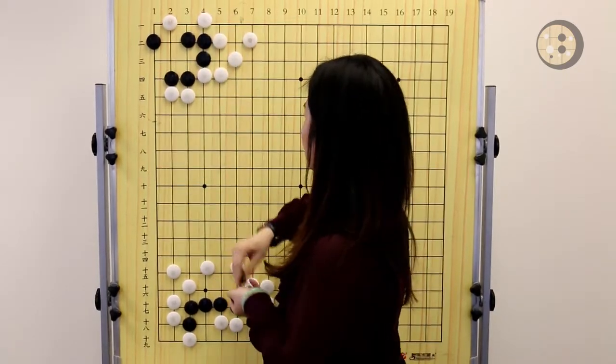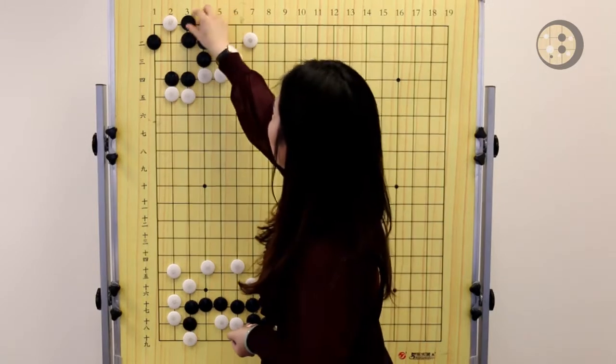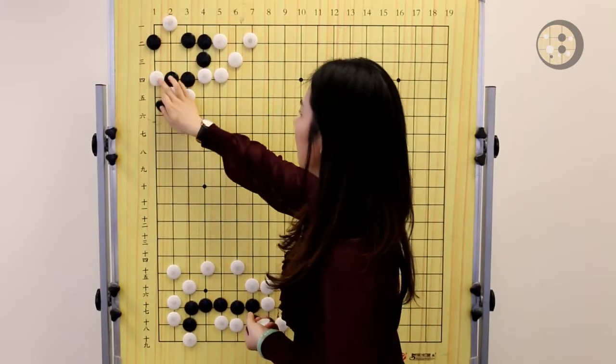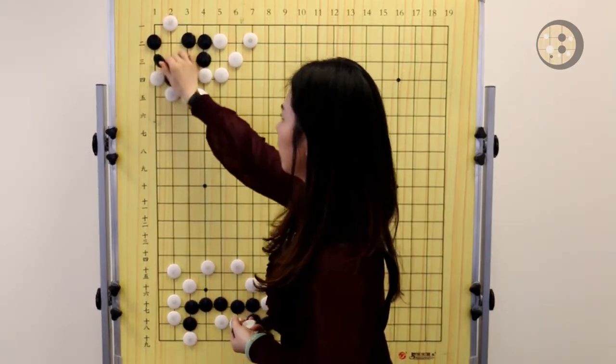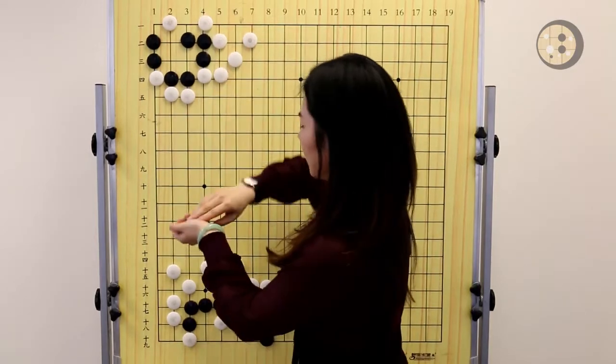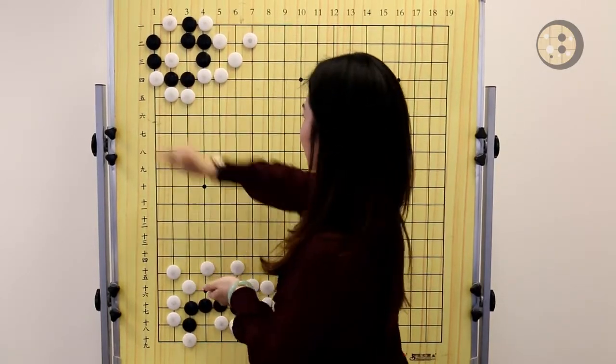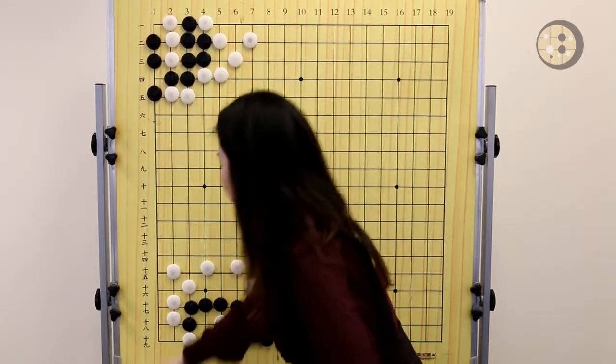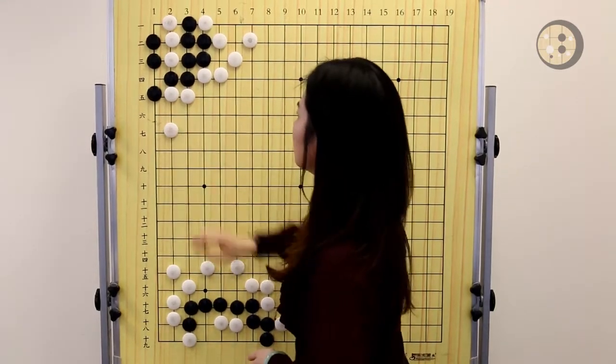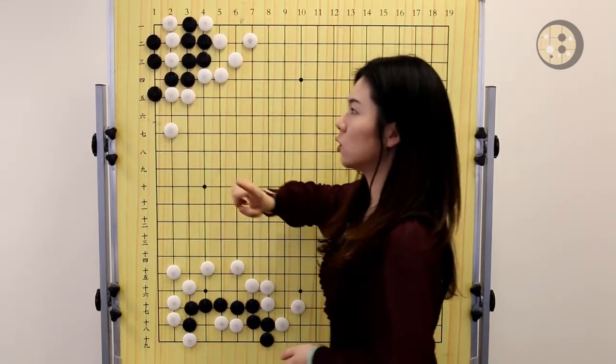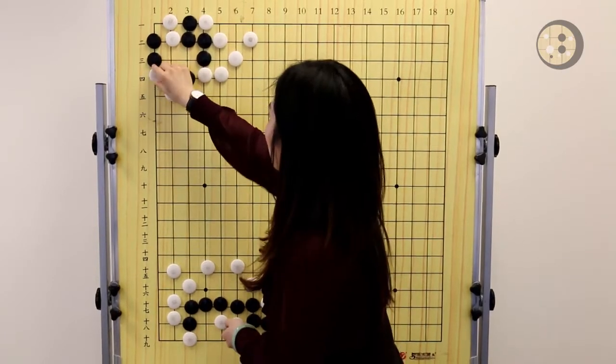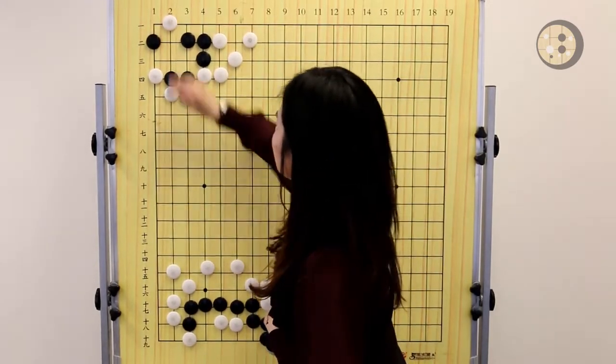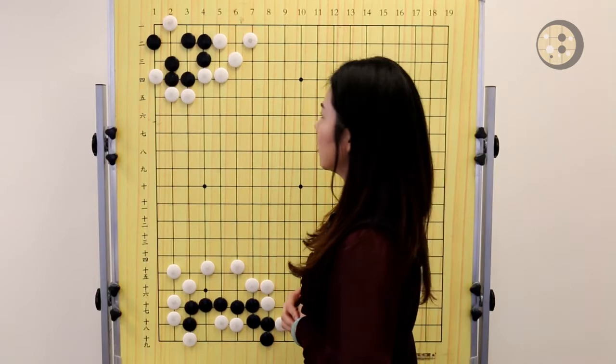Now after this move, it's impossible for white to connect this stone anymore. The only way for white to try to kill this group is still try to reduce the eye space. After white haneys here, make sure you're not going to block because if you block, the corner will be endangered. There's two cutting points here. If you connect and white blocks on the outside, the corner shape will be a straight three. So when white haneys here, black should just simply make the eye here and then the group is already alive.